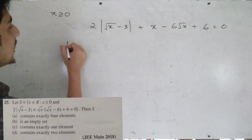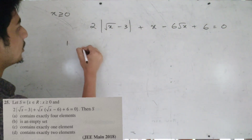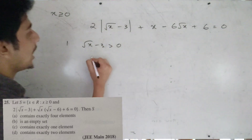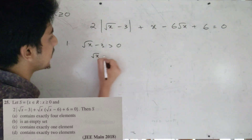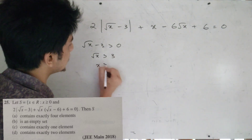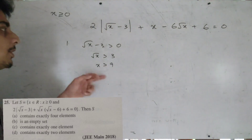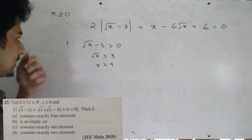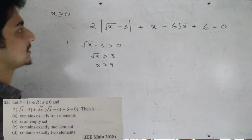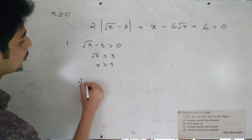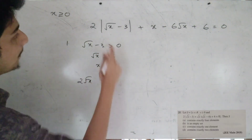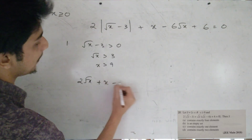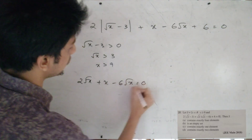Case 1: √x − 3 > 0, which means √x > 3, so x > 9. In this case the equation becomes 2(√x − 3), that is 2√x − 6 + 6 + x − 6√x equal to 0.